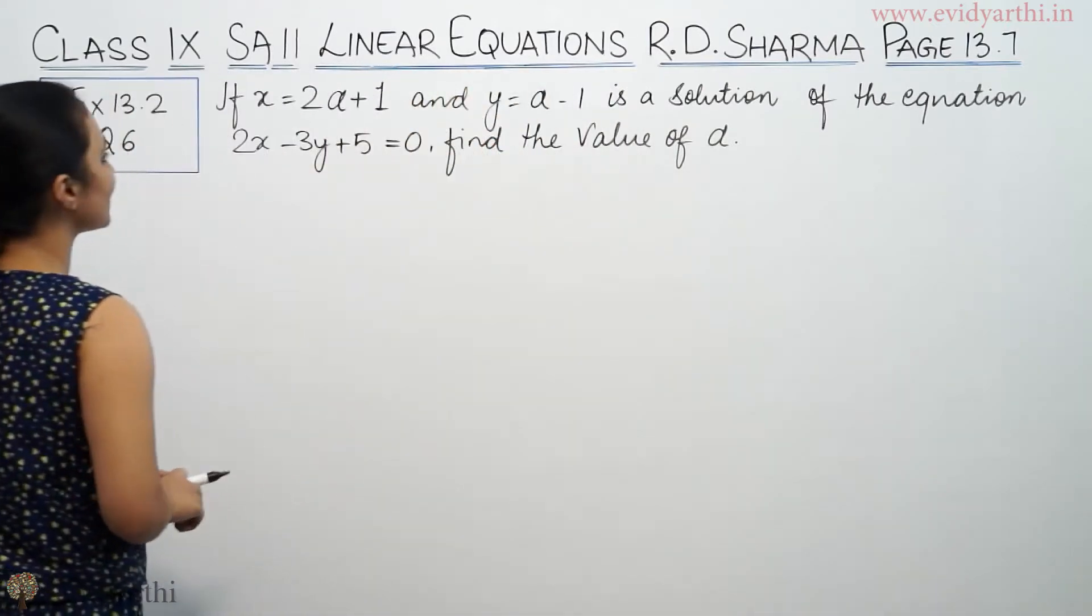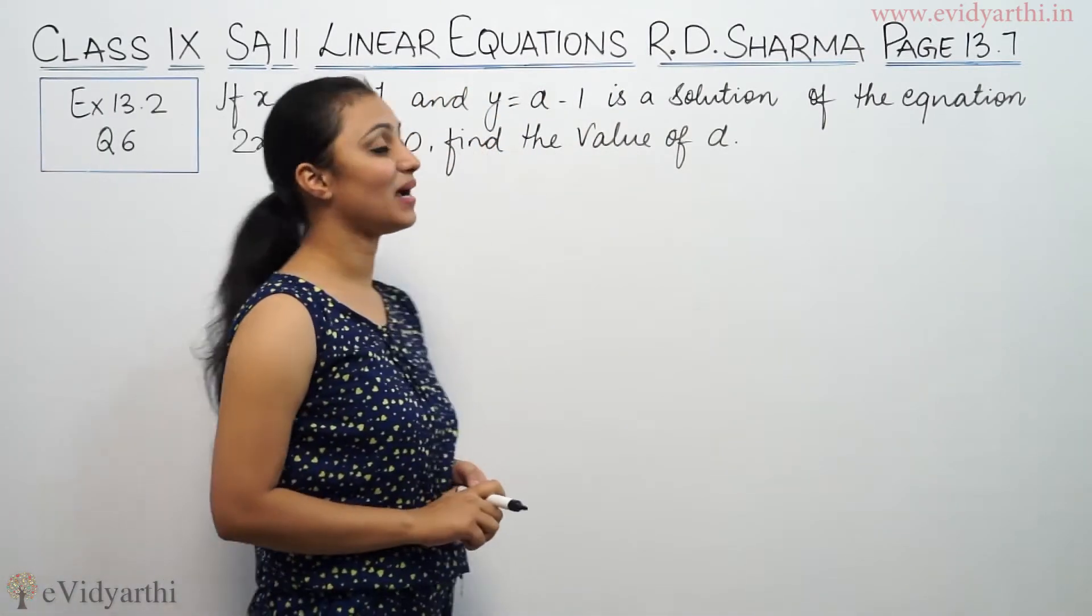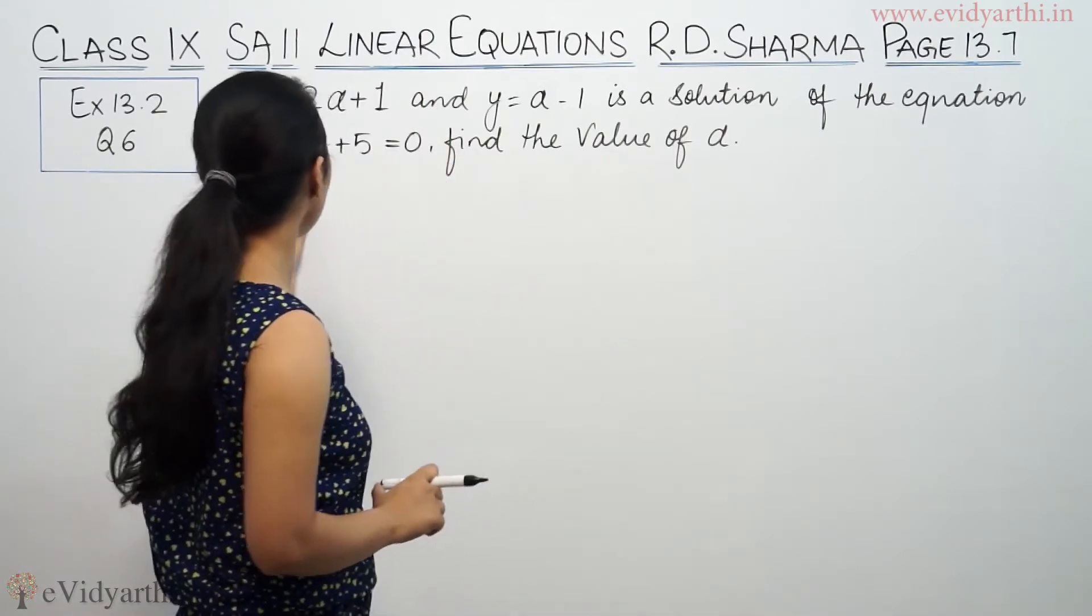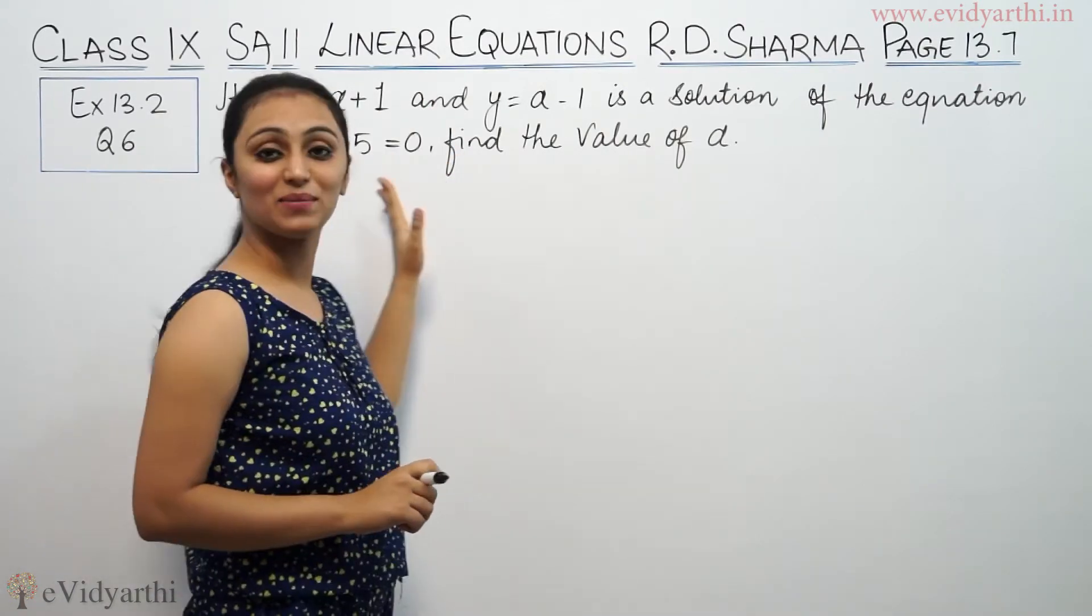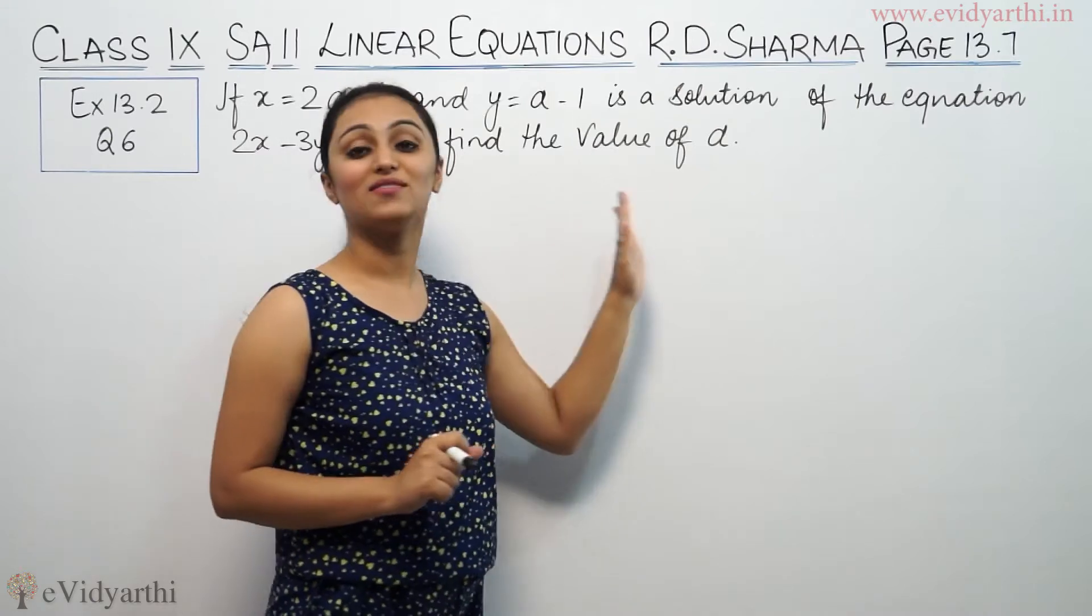It says if x equals 2 alpha plus 1 and y equals alpha minus 1 is a solution of the equation 2x minus 3y plus 5 equals 0, find the value of alpha.